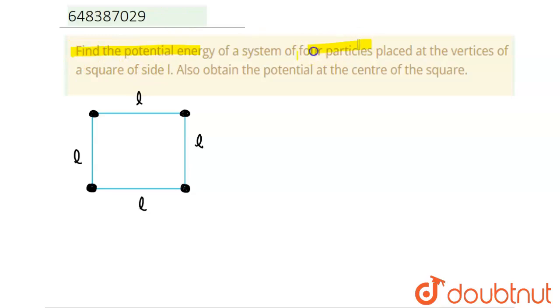potential energy of a system of four particles placed at the vertices of a square of side length L. Also obtain the potential at the center of the square. Okay, so this is our system. We have a square...